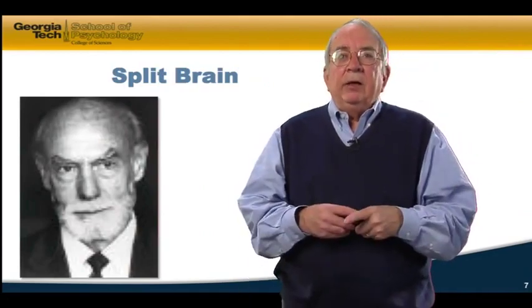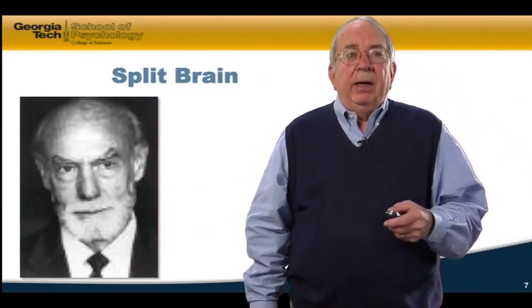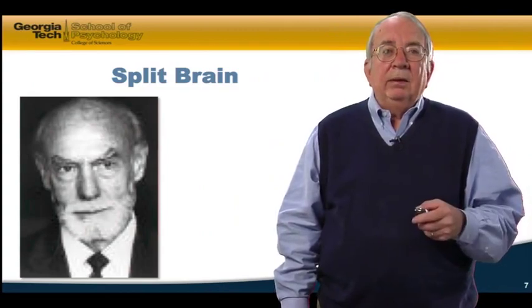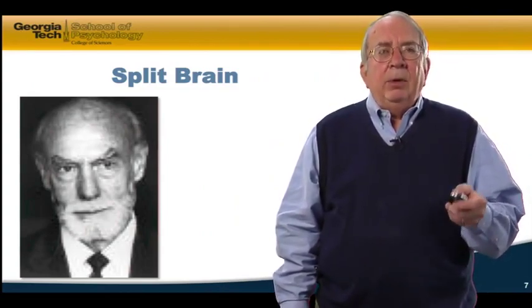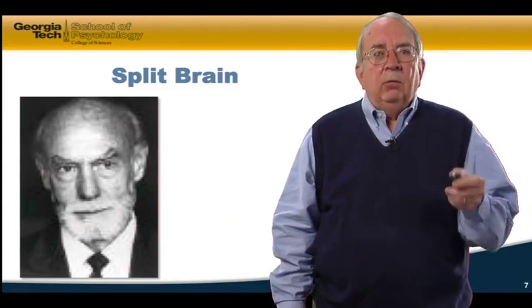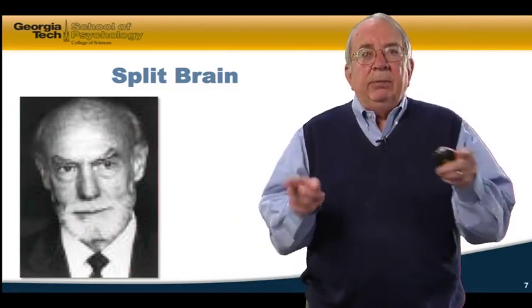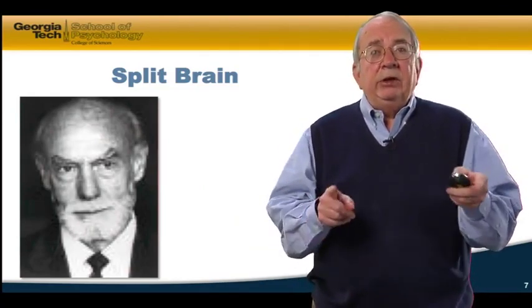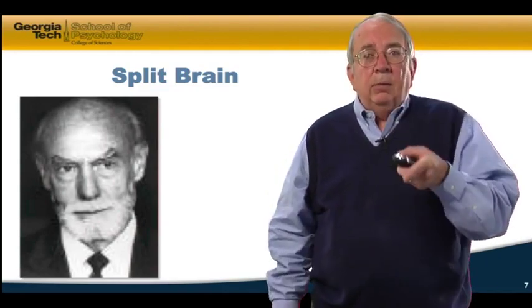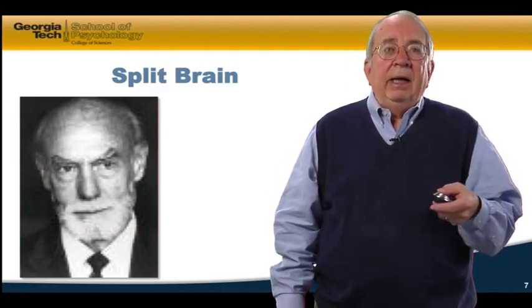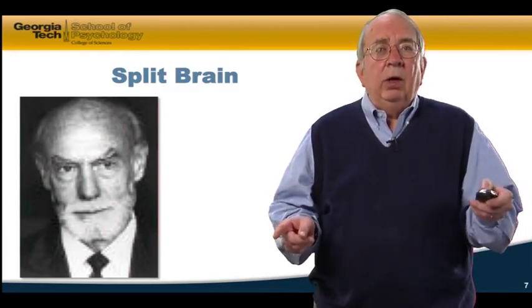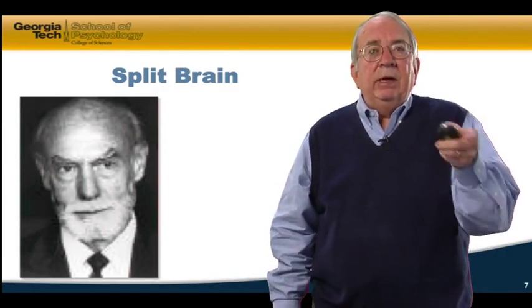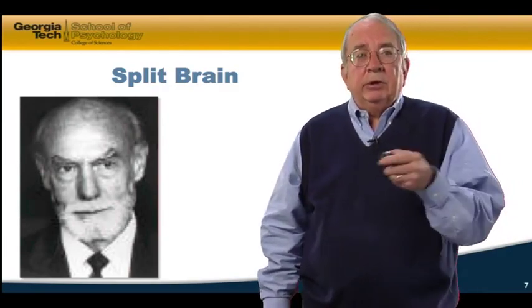And I want to talk now about the corpus callosum. Roger Sperry, the person on the picture that you see there, actually won the Nobel Prize for his work, primarily in animals with the role of the corpus callosum in interhemispheric transfer and communication. He would cut the corpus callosum in an animal and then look to see that, in fact, they had like two brains rather than one because the left hemisphere could not communicate with the right hemisphere and vice versa.